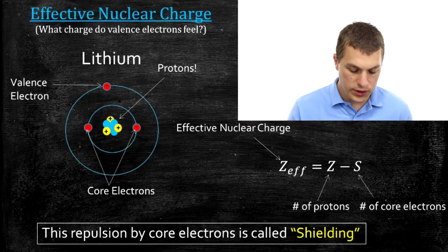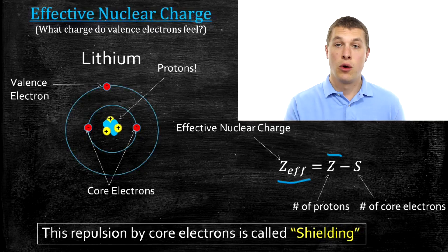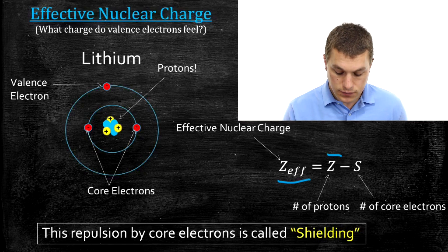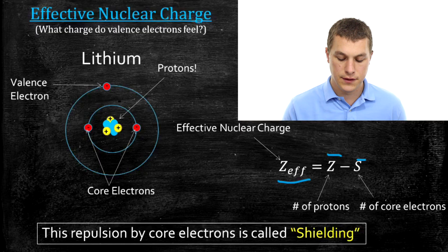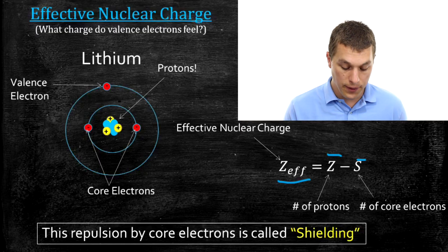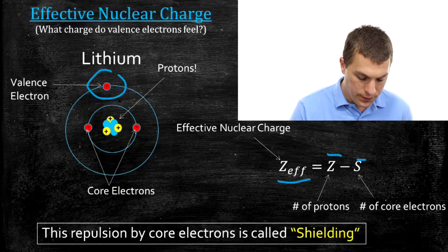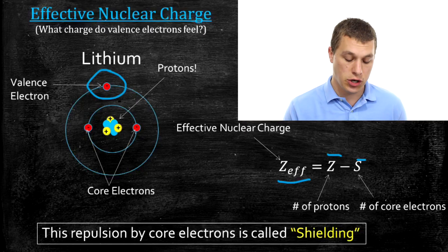That's exactly what this equation does. It says the effective nuclear charge is equal to the number of protons — that's what's pulling the valence electron in — minus the number of core electrons, which is what's pushing that valence electron away. We're thinking here just about the valence electron and we want to know how much of that nucleus's charge does it feel.